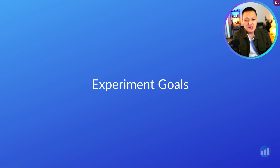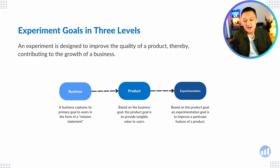Ultimately, it really boils down to what is the goal of your experiment. And when you think about the goal of an experiment, it's really embedded into three different levels: the goal at the business level, product level, and experimentation level.